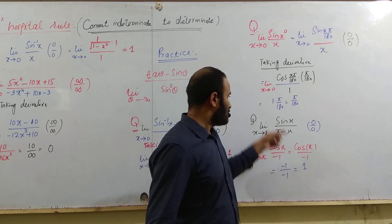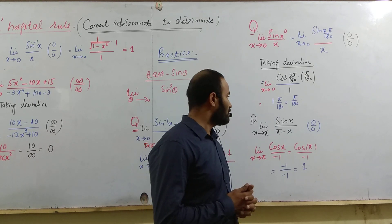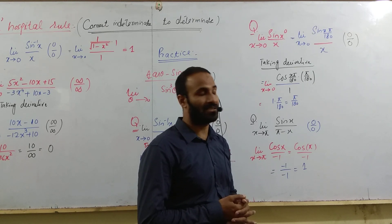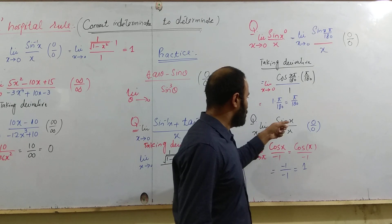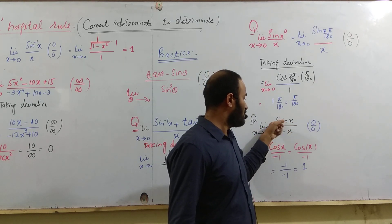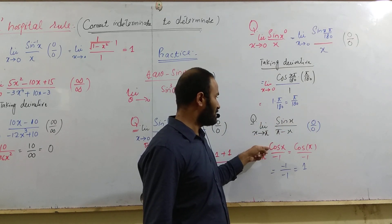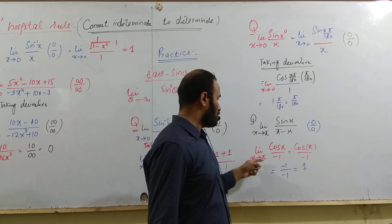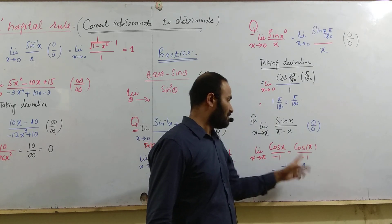Another important question: the limit of sin x divided by (π minus x), as x approaches π. In your previous classes you solved this using the substitution method, but in entrance exams you have no time for substitution — you can apply L'Hôpital's rule. When I put the limit, the numerator and denominator give 0 over 0. Take the derivative of sin x, which is cos x, and the derivative of (π minus x), which is minus 1. When you put the limit, you get cos π over minus 1, which is minus 1 over minus 1, equal to 1.